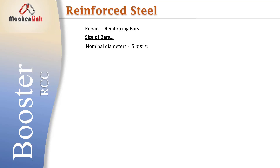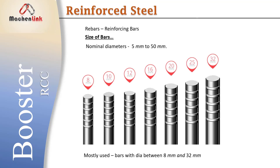The nominal diameter of steel available in India varies between 5mm to 50mm. But mostly steel bars with diameter between 8mm and 32mm are used.